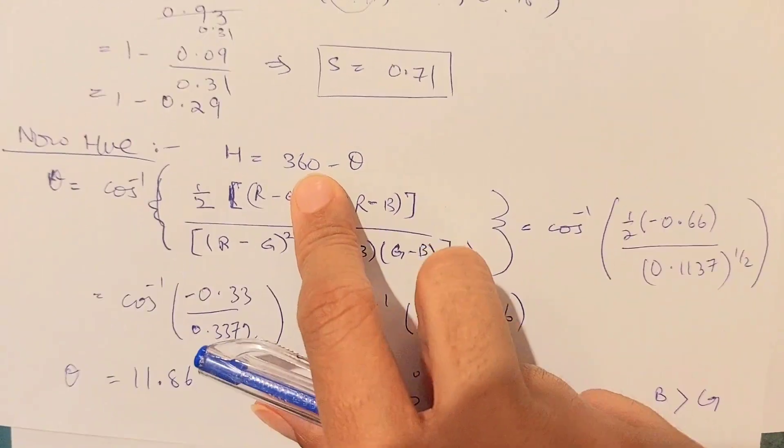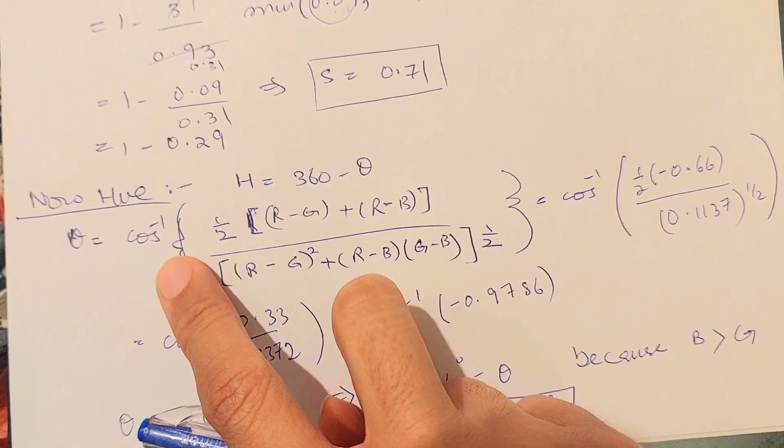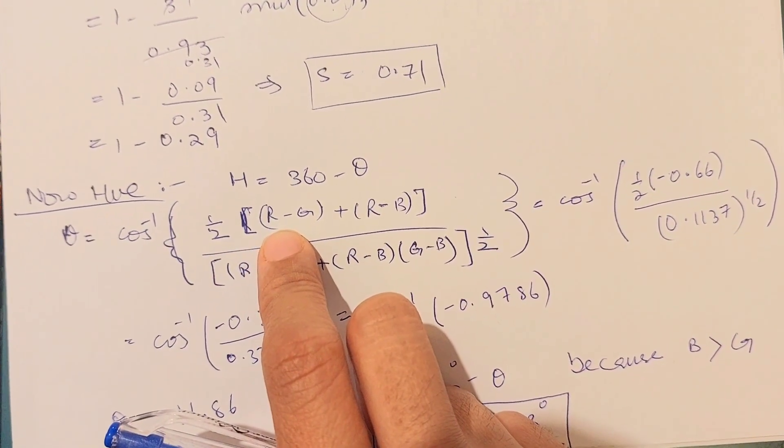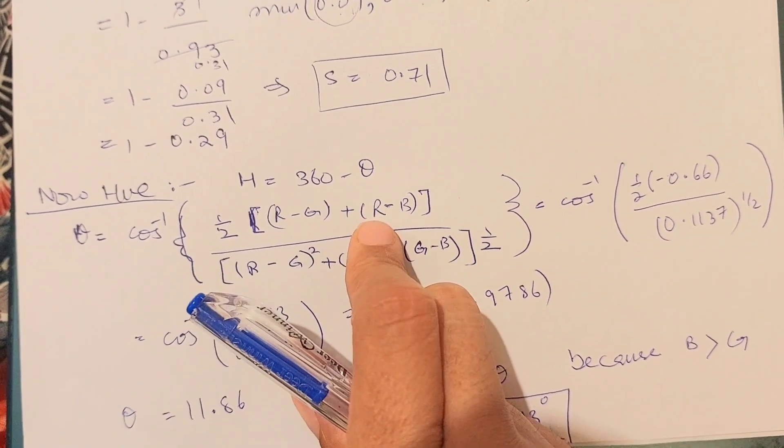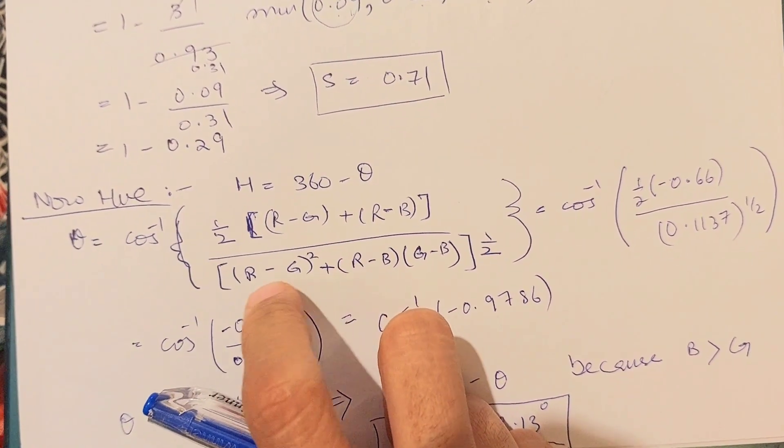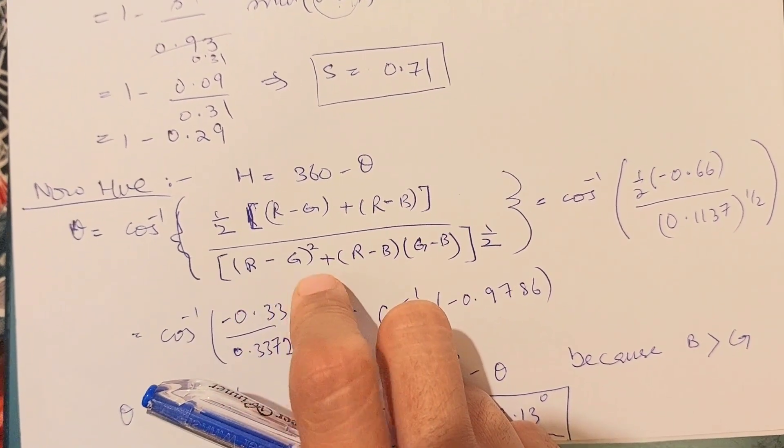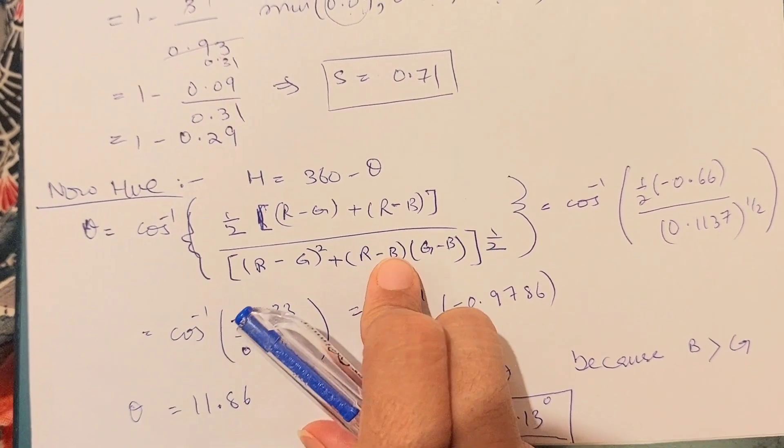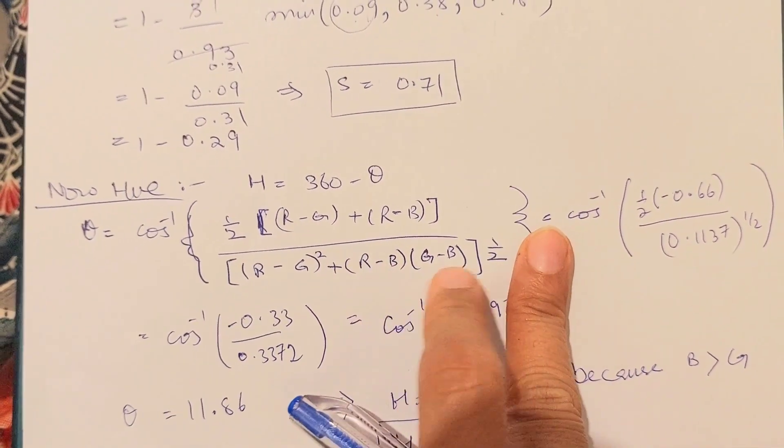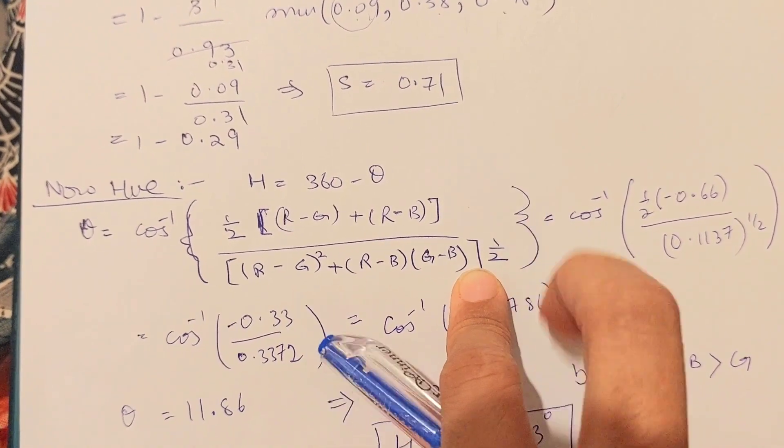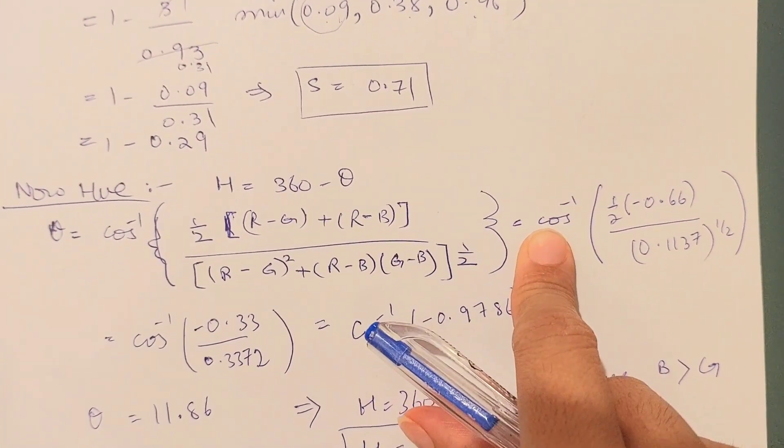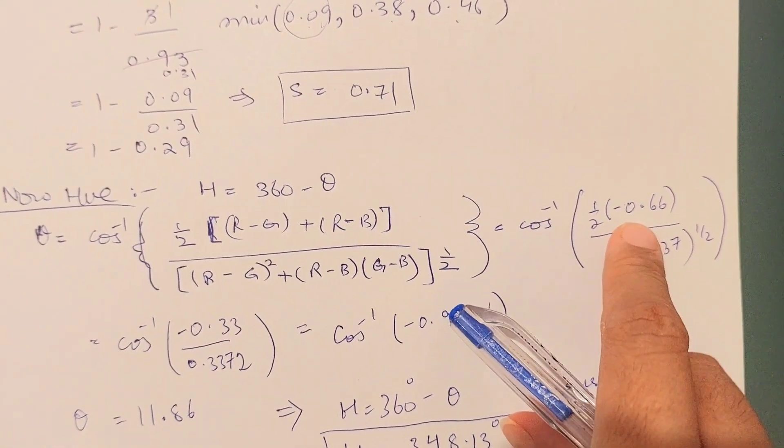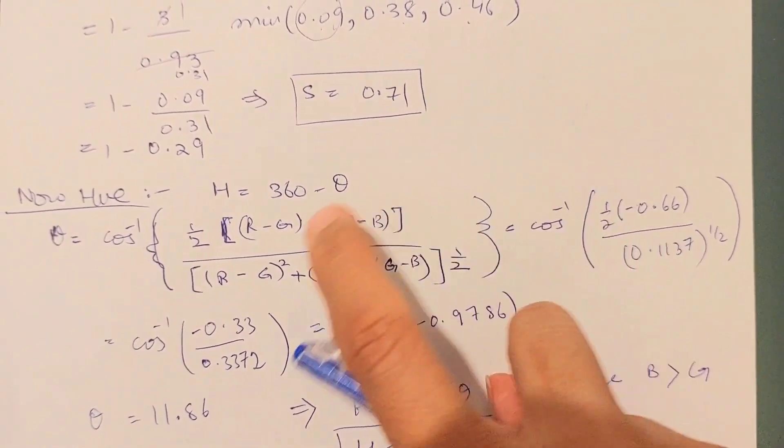We have to find theta and then simply minus this value of theta from 360. Theta equals cos inverse of half times R minus G plus R minus B. In the denominator, we have R minus G squared plus R minus B multiplied with G minus B, and we have a square root over there.